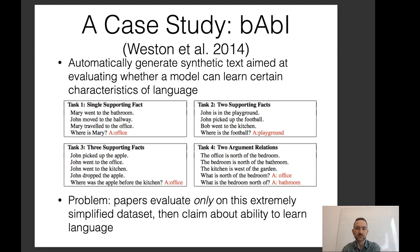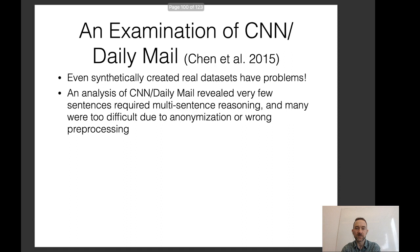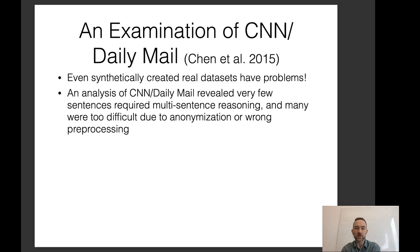Another example is the popular CNN Daily Mail dataset. Analysis revealed very few sentences requiring complex reasoning, and many were too difficult due to anonymization or wrong preprocessing. Many of the answers could be done by exact match or paraphrasing, and only a few actually required reasoning over multiple sentences.